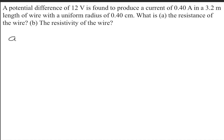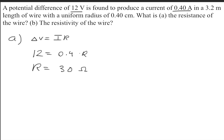To solve part A, we're going to use Ohm's Law, which is delta V is equal to I times R. We're given the voltage and we're given the current. So 12 is equal to 0.4 times R. So we find that the resistance is 30 ohms.